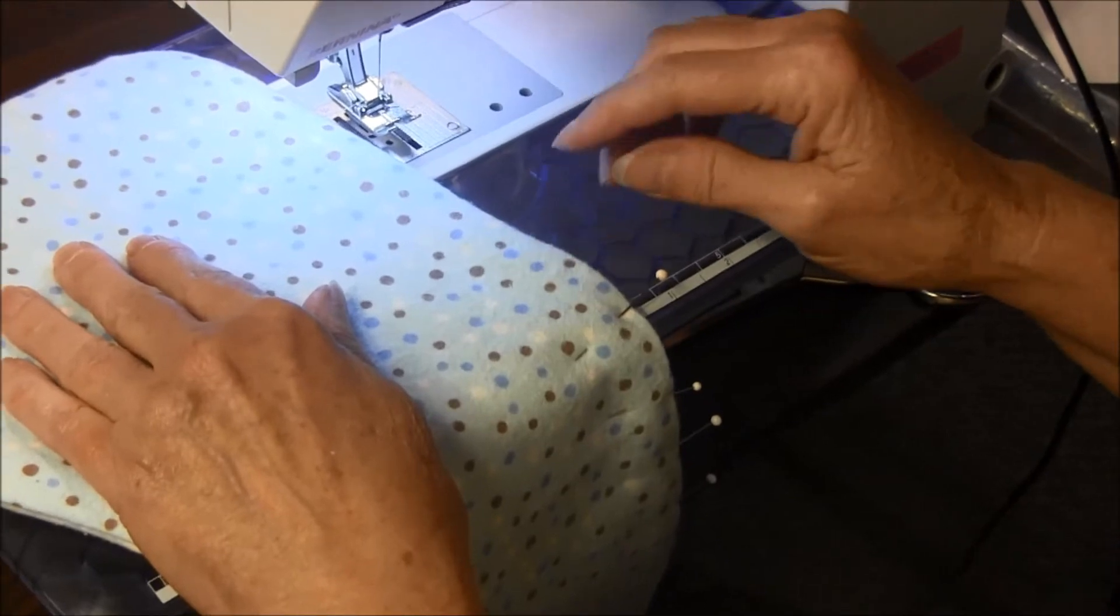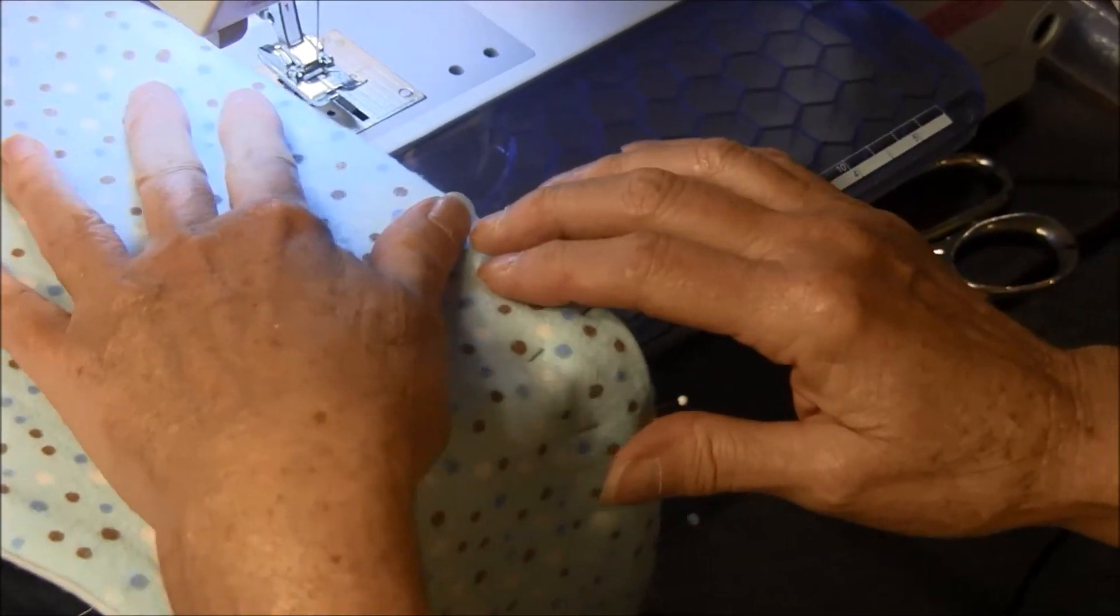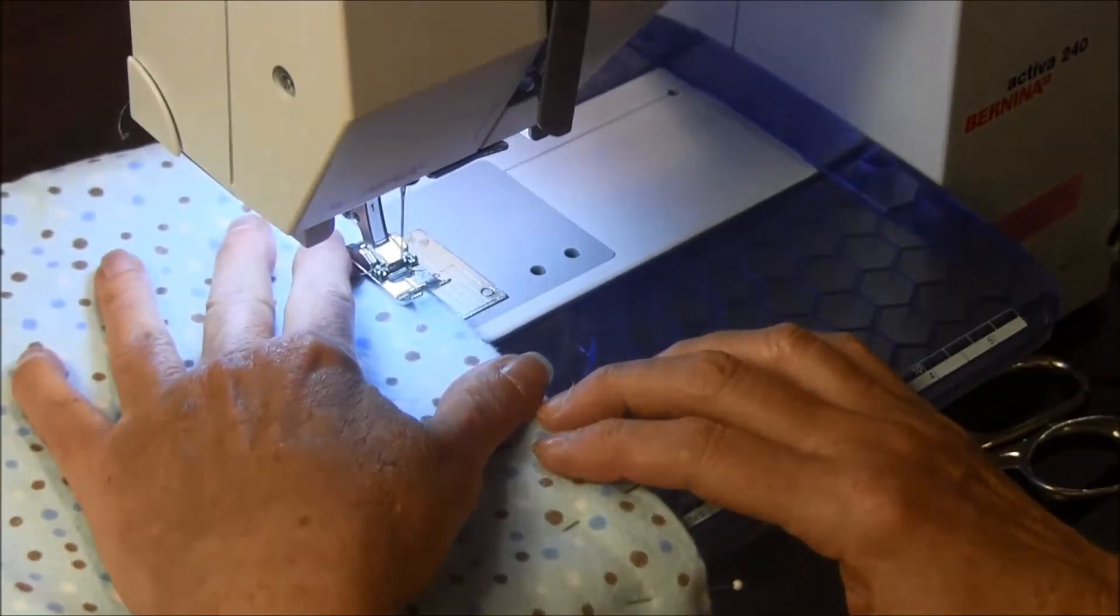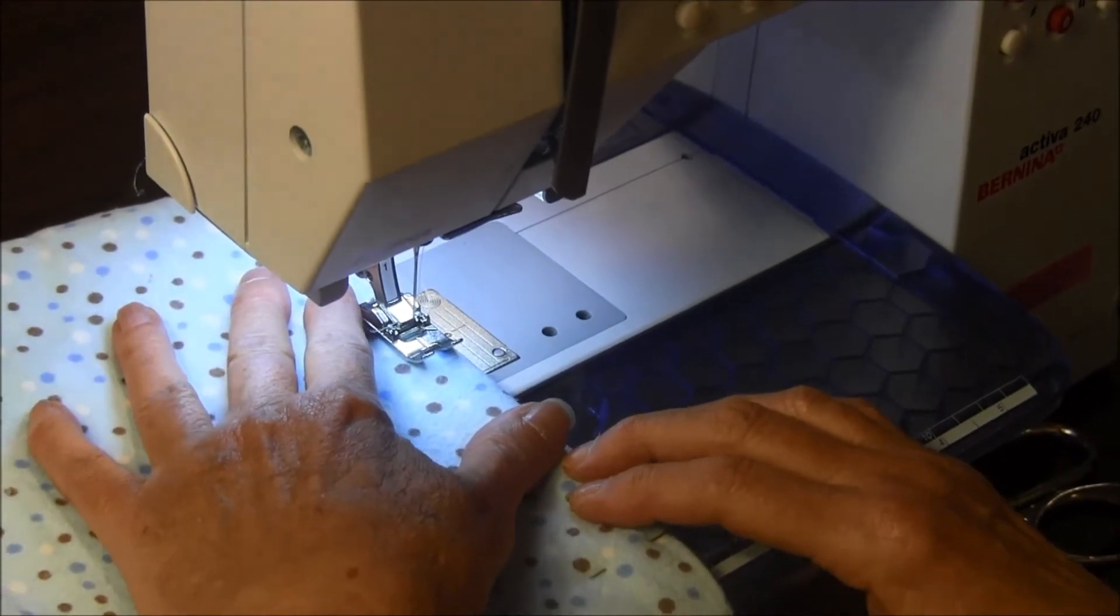The next thing you want to do is topstitch all the way around the burp cloth using about a quarter of an inch from the edge.